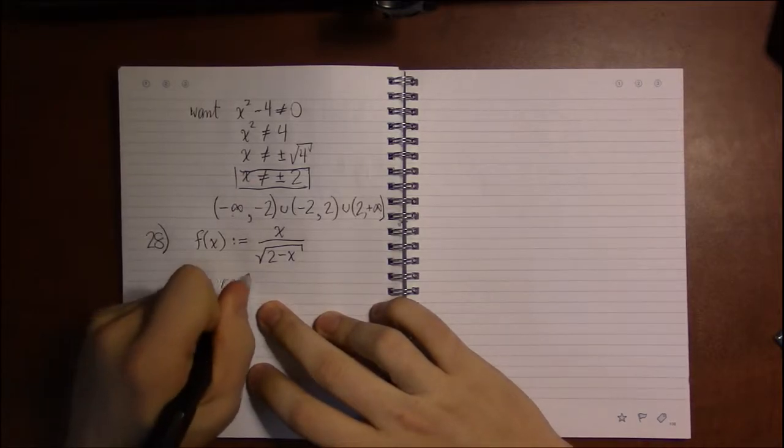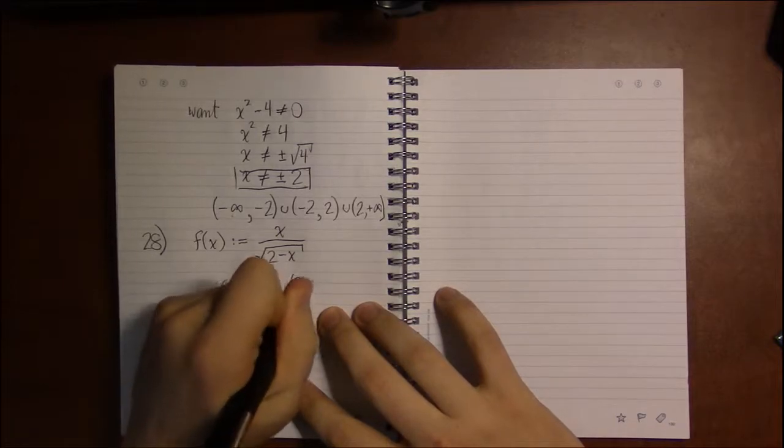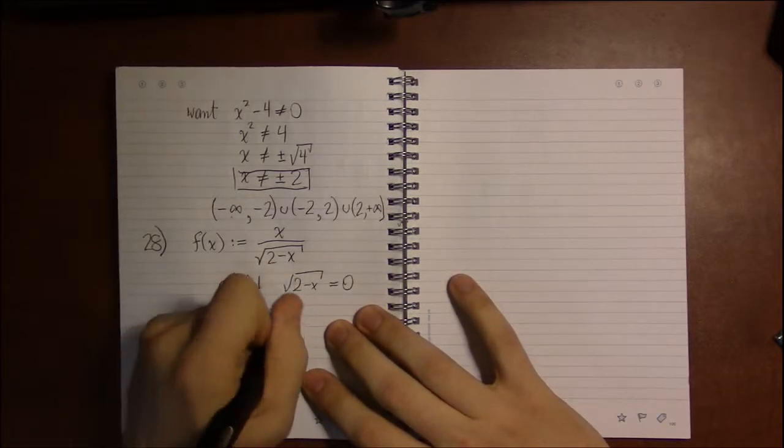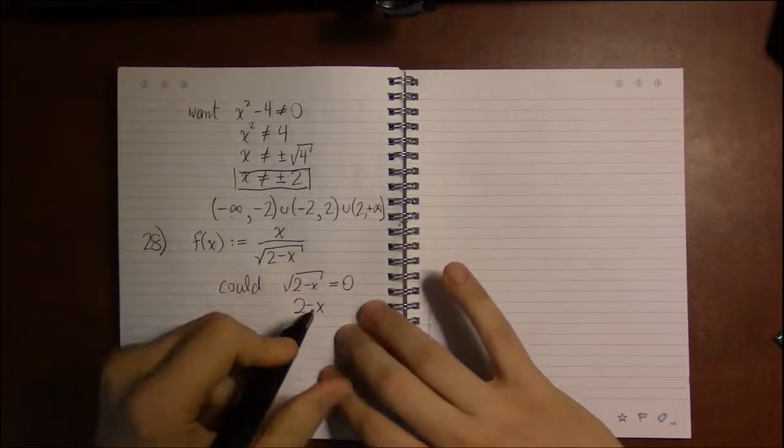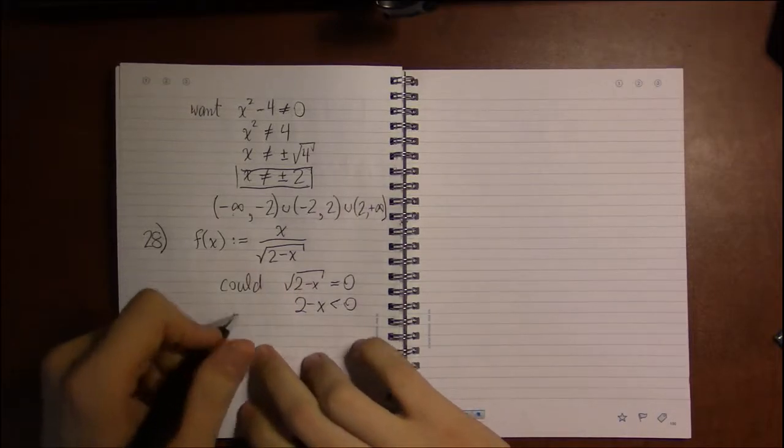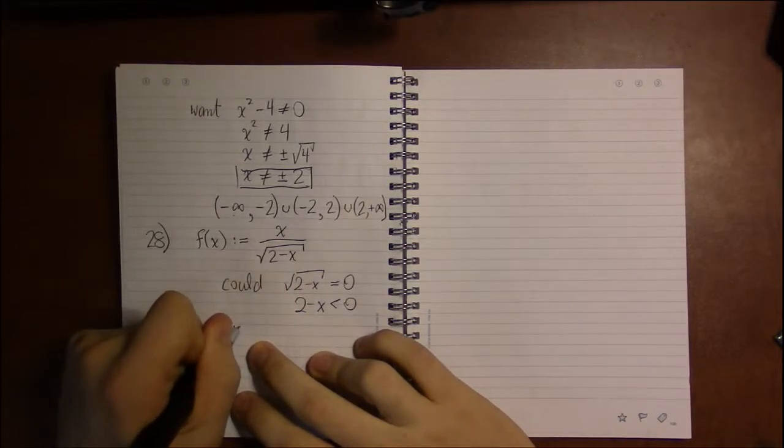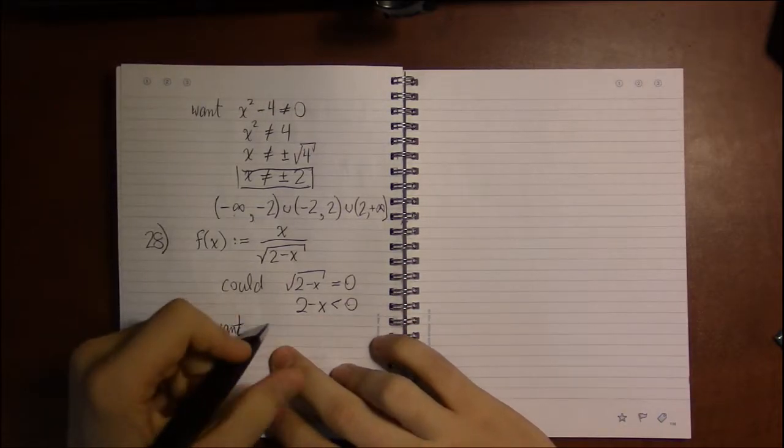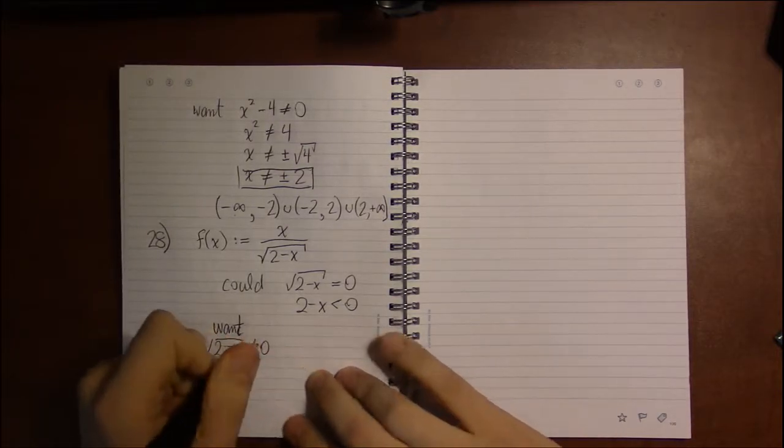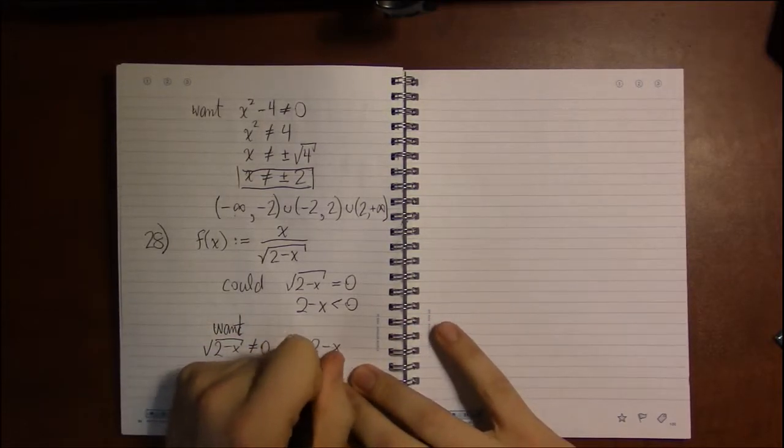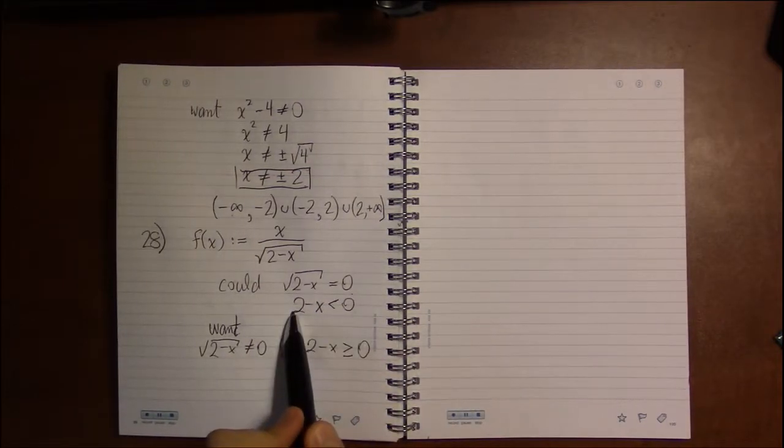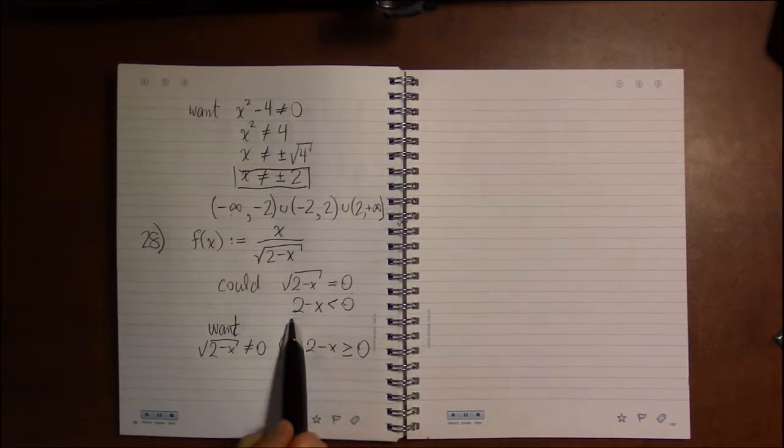So we could have the denominator be zero, or we could have what's inside the square root be negative. So what we want - we want to avoid both of these things. We want square root of 2 minus x to not be equal to zero, and we want 2 minus x to be greater than or equal to zero. We don't want anything bad to happen. We don't want this and we don't want that.